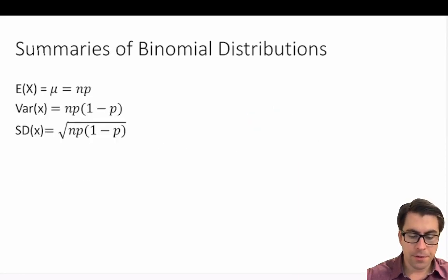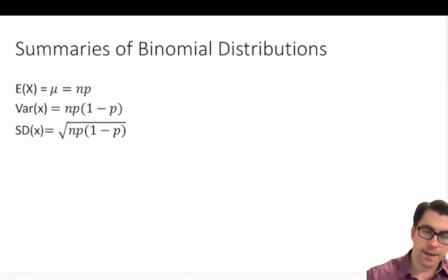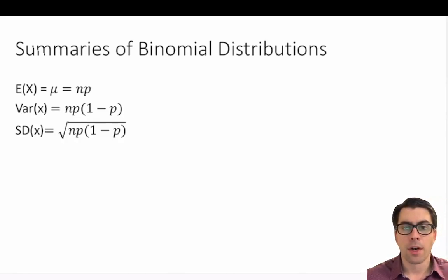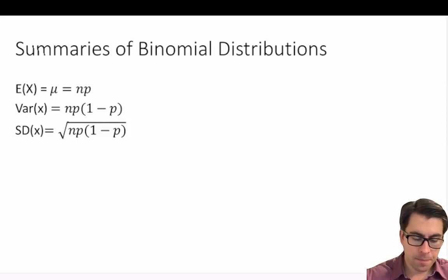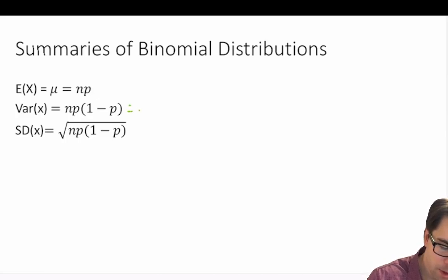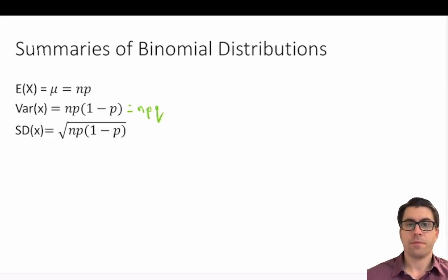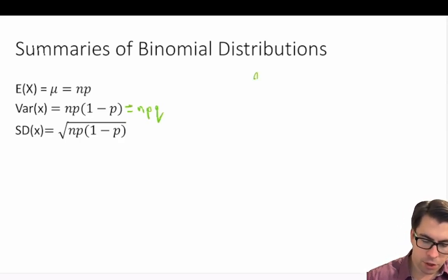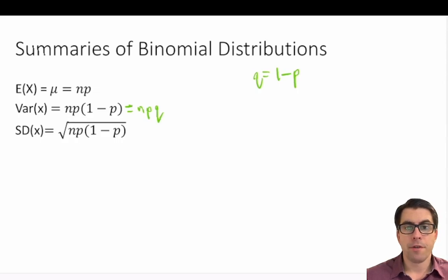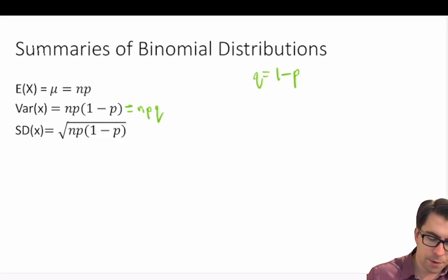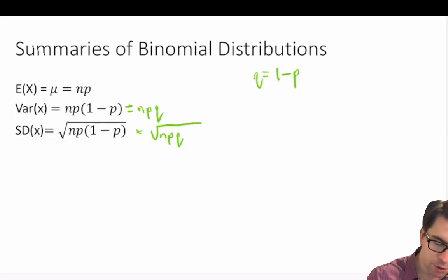We also need to know the summary statistics for binomial distributions. The expected value, also known as mu, is simply equal to n times p, where n is the number of trials and p is the probability of success. The variance equals n times p times (1 minus p), which is also n times p times q. The standard deviation equals the square root of n times p times q, which is also the square root of the variance.